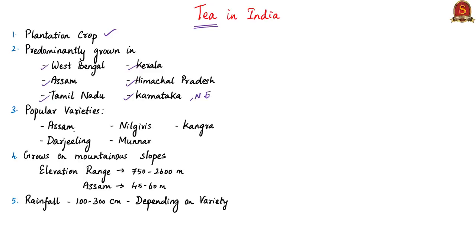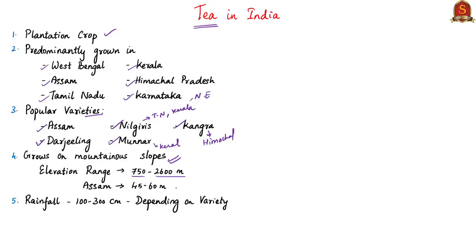Popular varieties of Indian tea include the Assam variety grown in Assam and other northeastern states, the Darjeeling variety in Darjeeling and other parts of West Bengal, the Nilgiris variety grown in the confluence area of Western and Eastern Ghats in Kerala and Tamil Nadu, the Munnar variety largely grown in Kerala, and the Kangra variety grown in Kangra Valley of Himachal Pradesh. Tea is generally grown on mountainous slopes with elevations ranging from 750 to 2,600 meters; in Assam, it is cultivated at 45 to 60 meters above sea level.